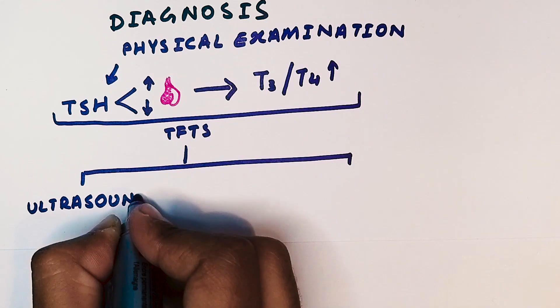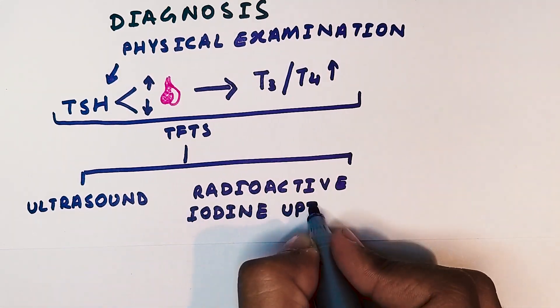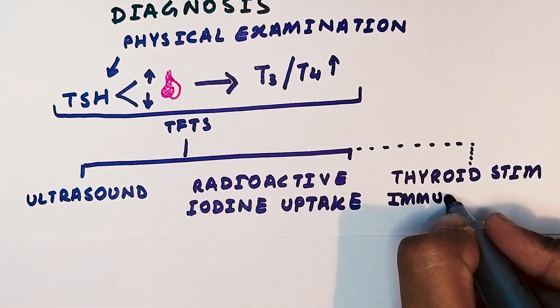Additional tests such as thyroid ultrasound, radioactive iodine uptake scan, and thyroid antibodies may also be performed.